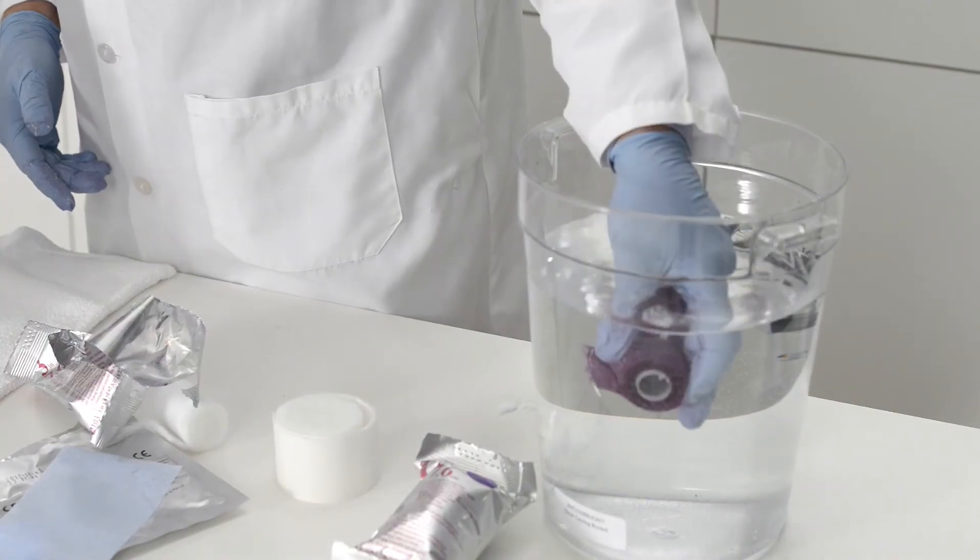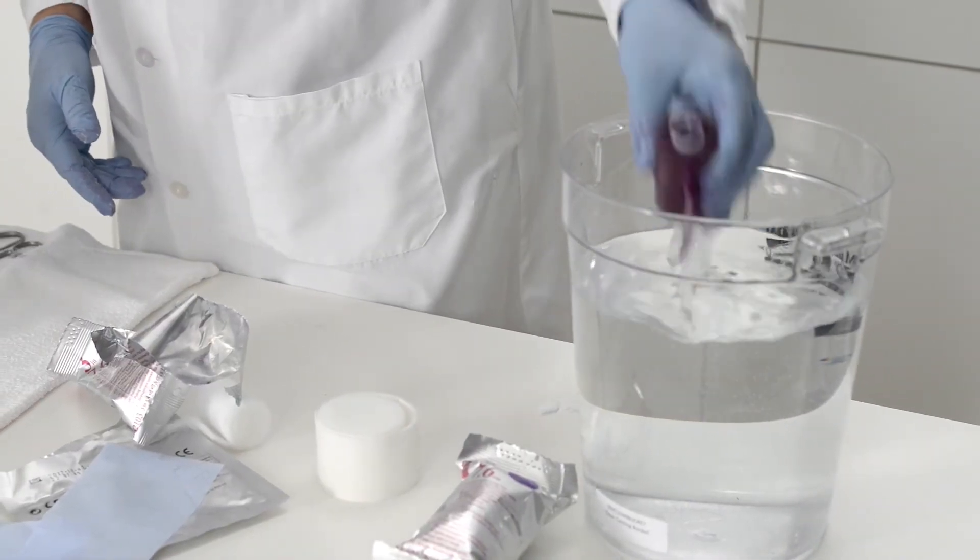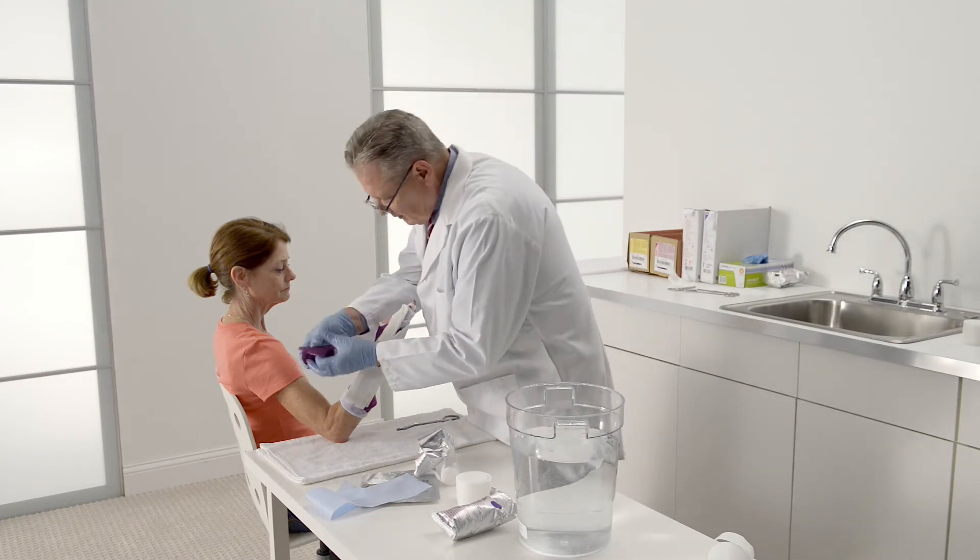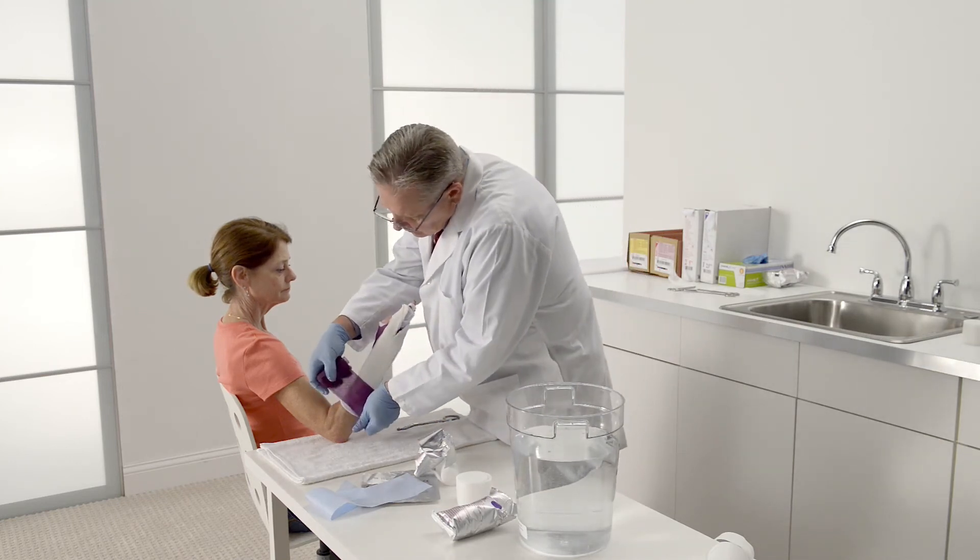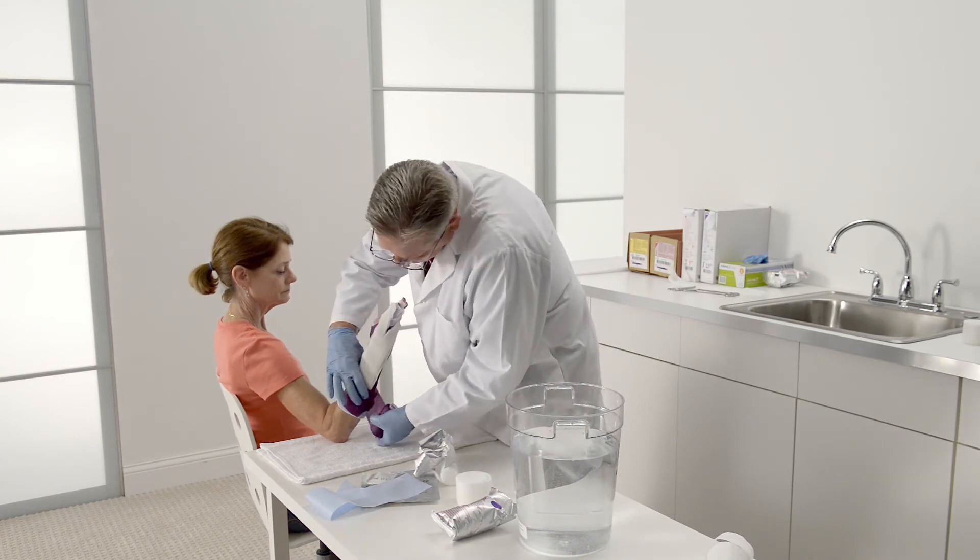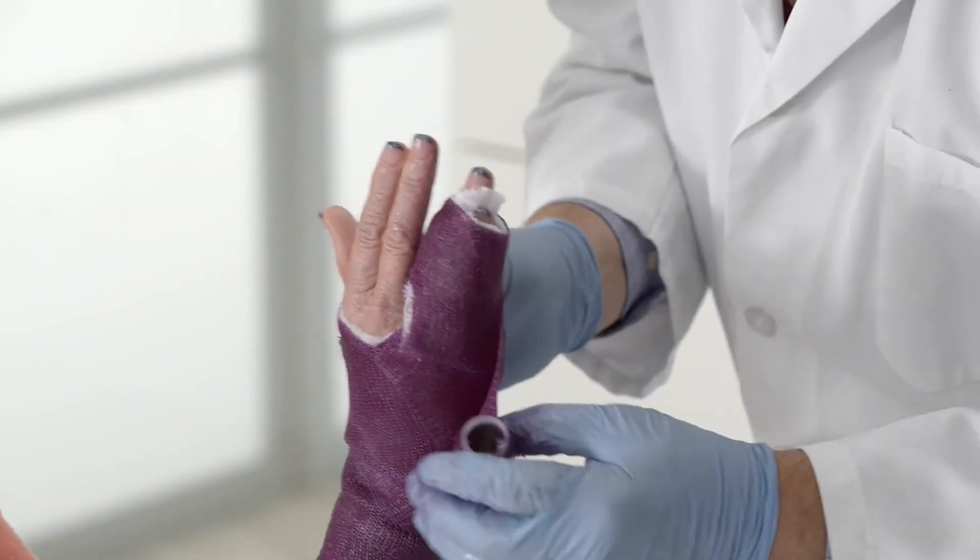Overwrap the splint with the second layer of casting tape. Dip the roll in water. Do not squeeze if the maximum set time of five minutes is desired. For faster set time of three minutes, squeeze the roll three times. Roll casting tape from the bottom of the arm up to the wrist and fingers.